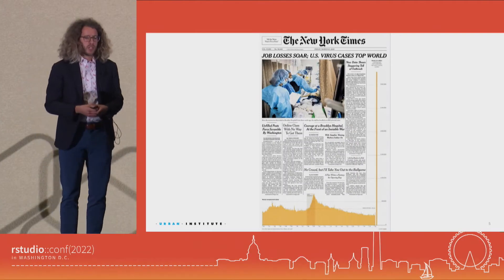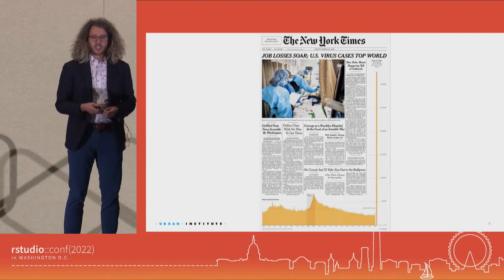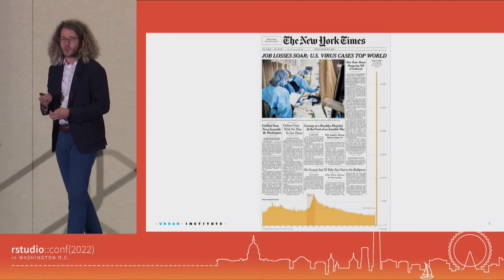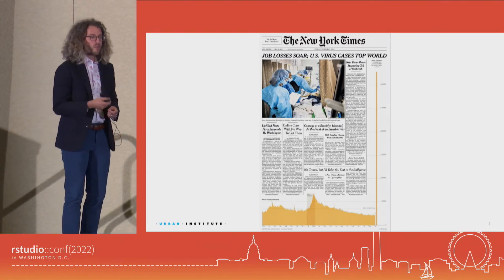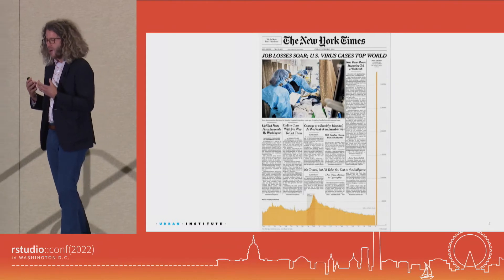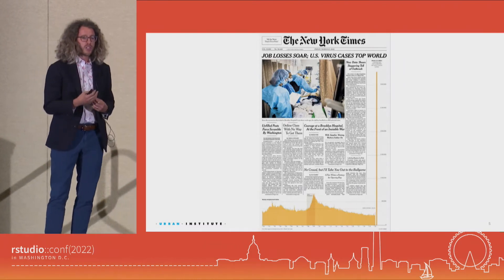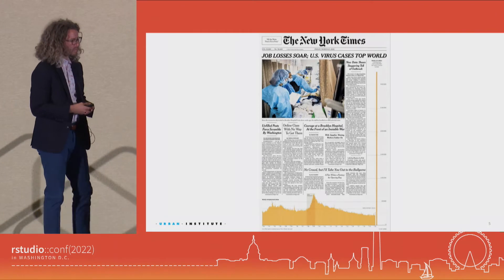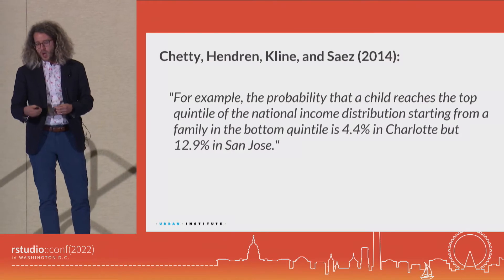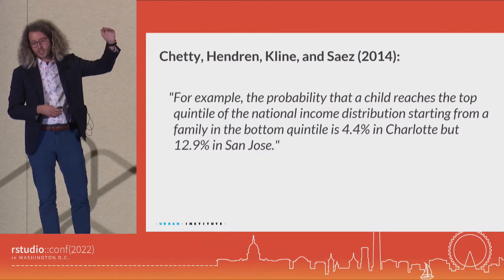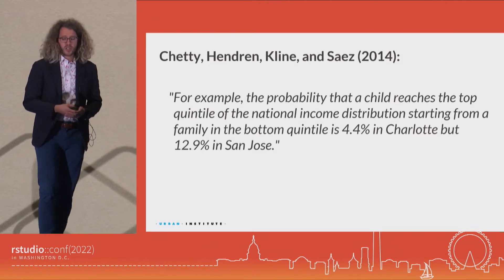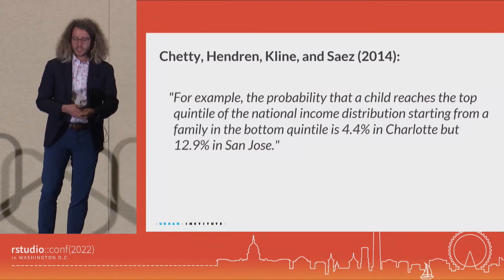I'll give you another example. In 2013, Raj Chetty, Emmanuel Saez, and co-authors released groundbreaking research about intergenerational mobility in the United States using data from 40 million anonymized tax records. This was really big research that deals with how Americans see themselves — we have that desire for our children to be better off than ourselves. One of the things they found is that place matters quite a bit. The probability that a child reaches the top quintile of the national income distribution, starting from a family in the bottom quintile, is 4.4 percent in Charlotte, North Carolina, but 12.9 percent in San Jose, California.